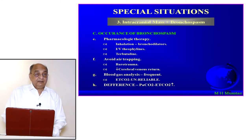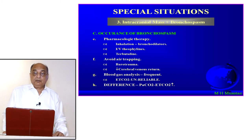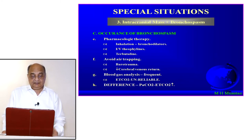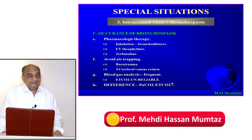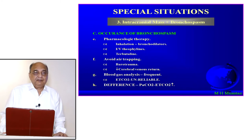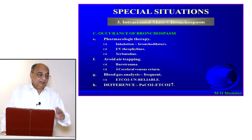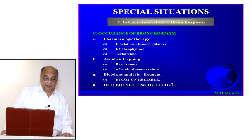If bronchospasm occurs during anaesthesia: all inhalational anaesthetic agents are bronchodilators — increase the inhalational concentration. Give IV theophylline, start aminophylline infusion as it is a direct smooth muscle relaxant. You can also use terbutaline. Avoid air trapping — always monitor whether induced PEEP is building up on the ventilator. If PEEP is building up, it means gas is being trapped, which will eventually lead to barotrauma.